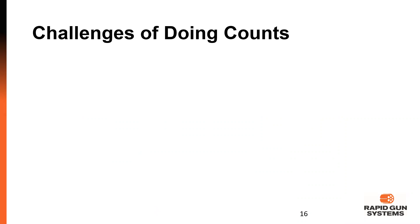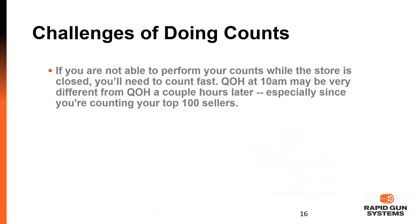The key challenge here is timing. Because we're dealing with our top 100 items, something you count and run a report for at 10 o'clock might have a very different count a few hours later. You want to be able to generate the report, print it out, count the items, and make the changes within a short period of time — say, an hour or less. The less time between printing and posting, the better. If you're too busy to complete the process end-to-end quickly, do it when the store is less busy.